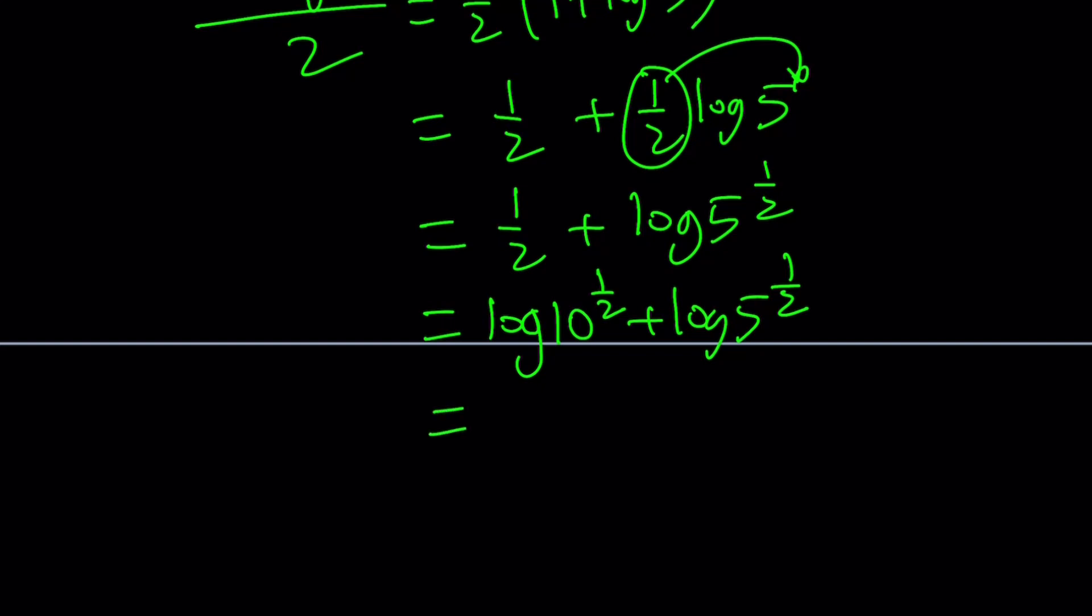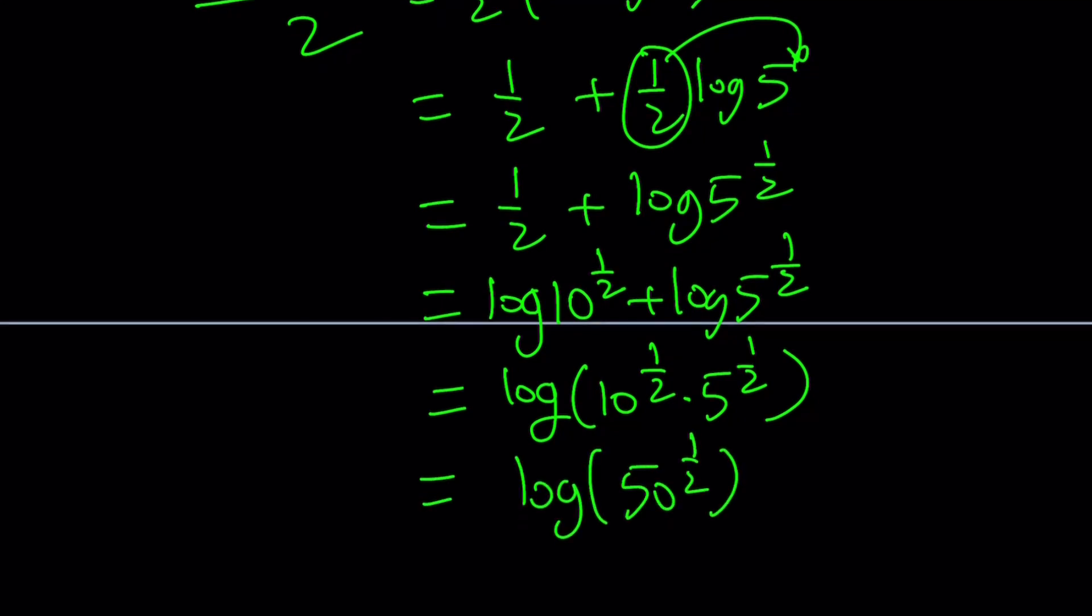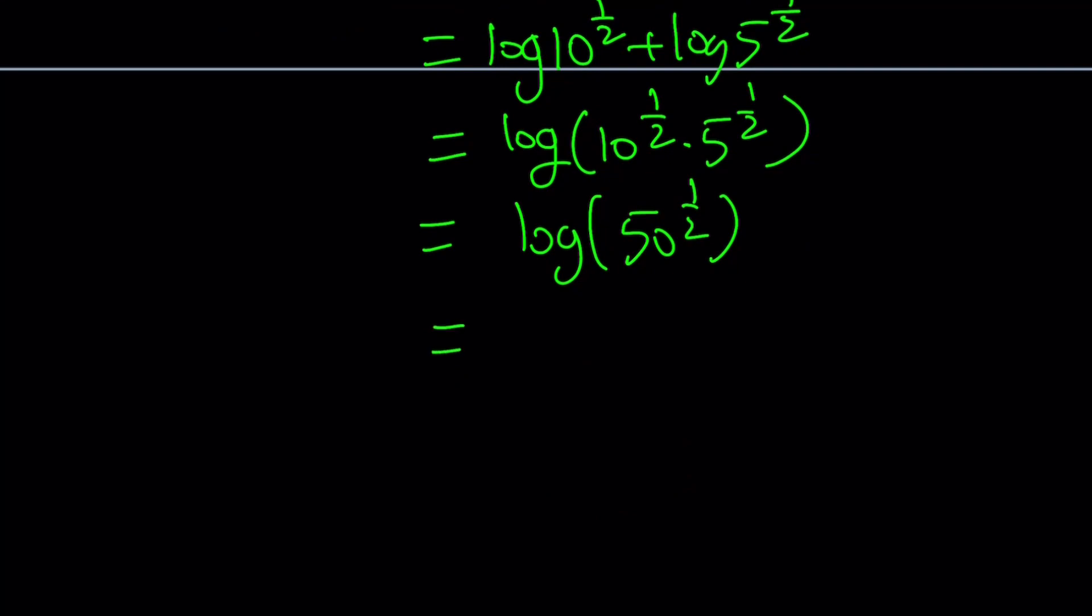Now we can combine log x plus log y into a product or the log of a product. So that's going to be log 10 to the power 1 half times 5 to the power 1 half. And then this becomes log 50 to the power 1 half because 10 times 5 is 50. And this becomes log square root of 50.